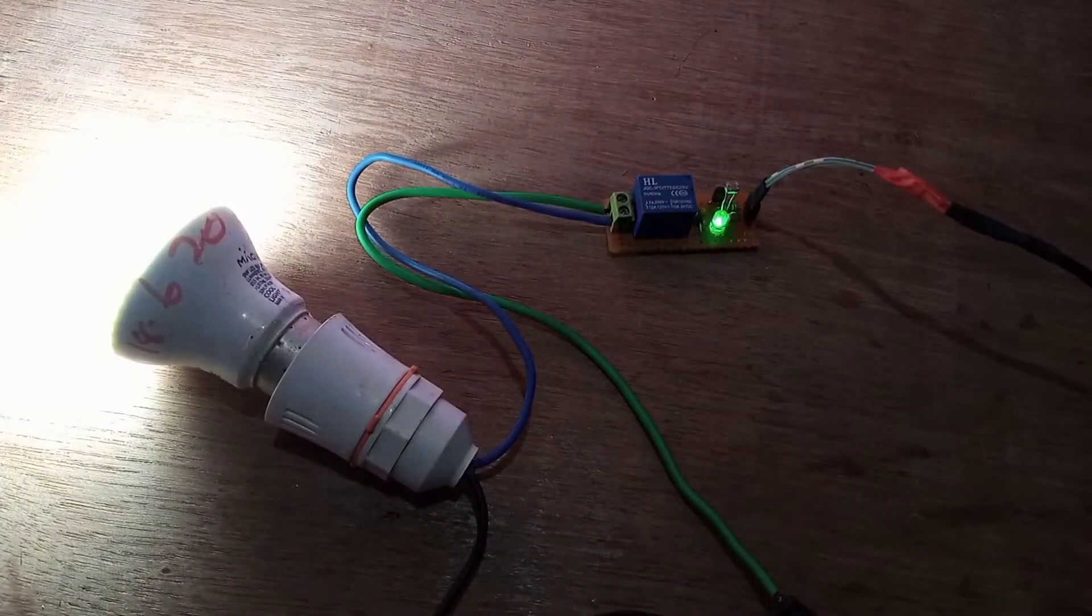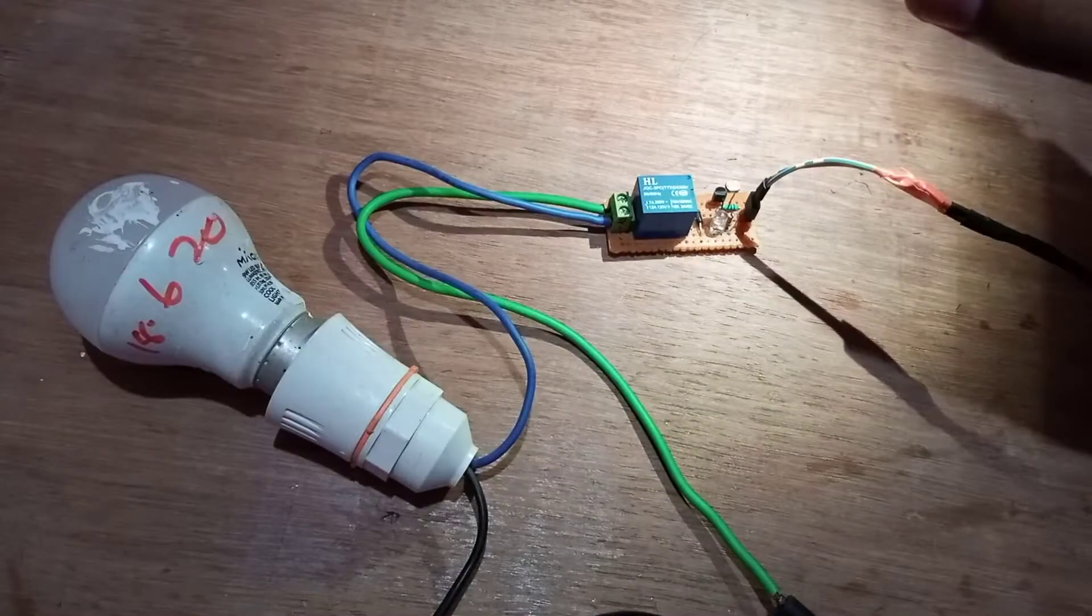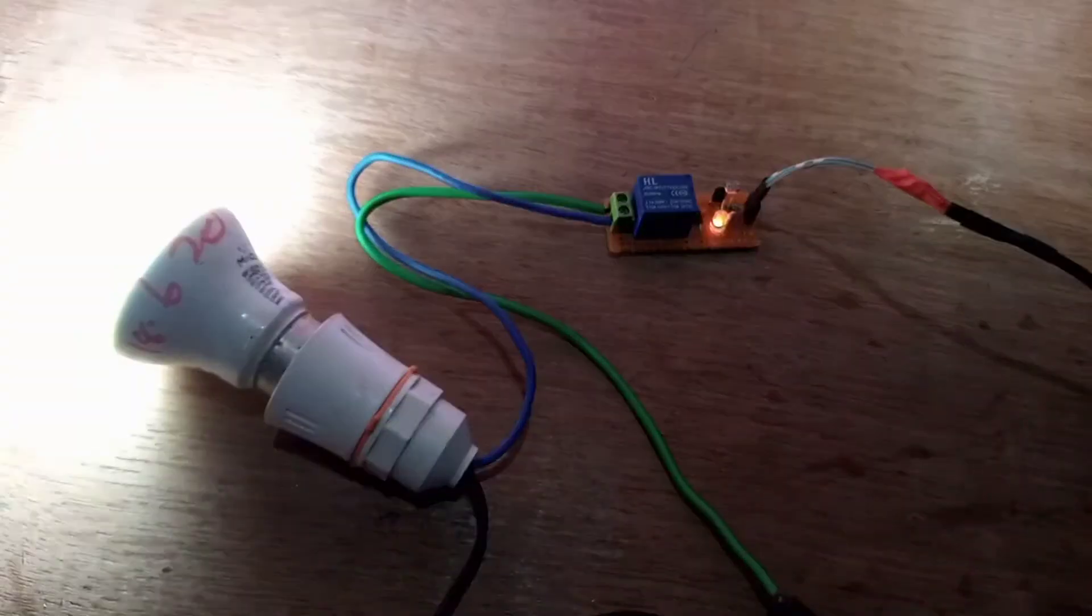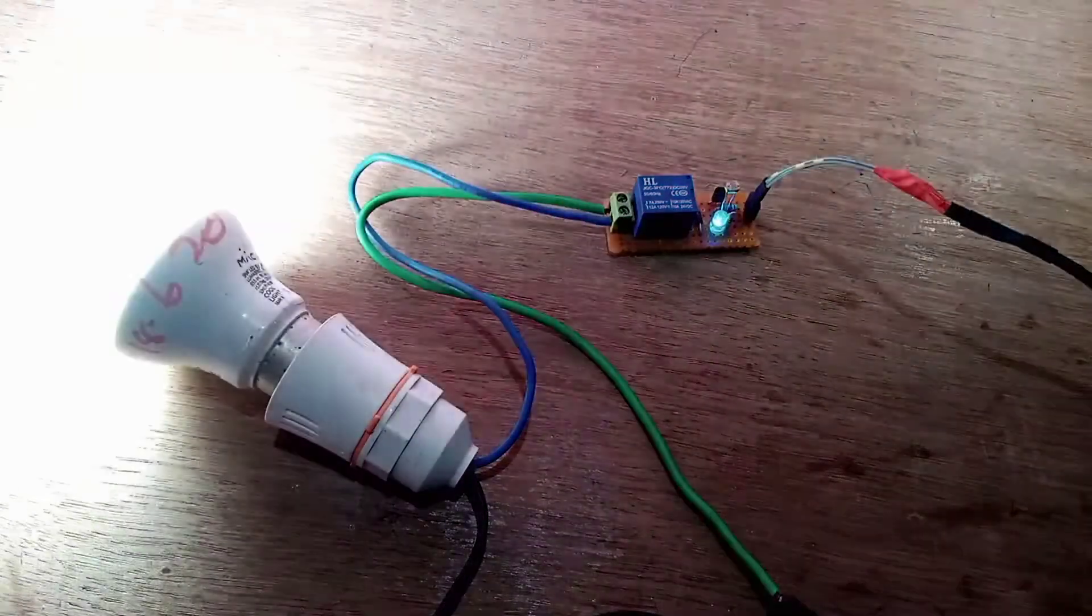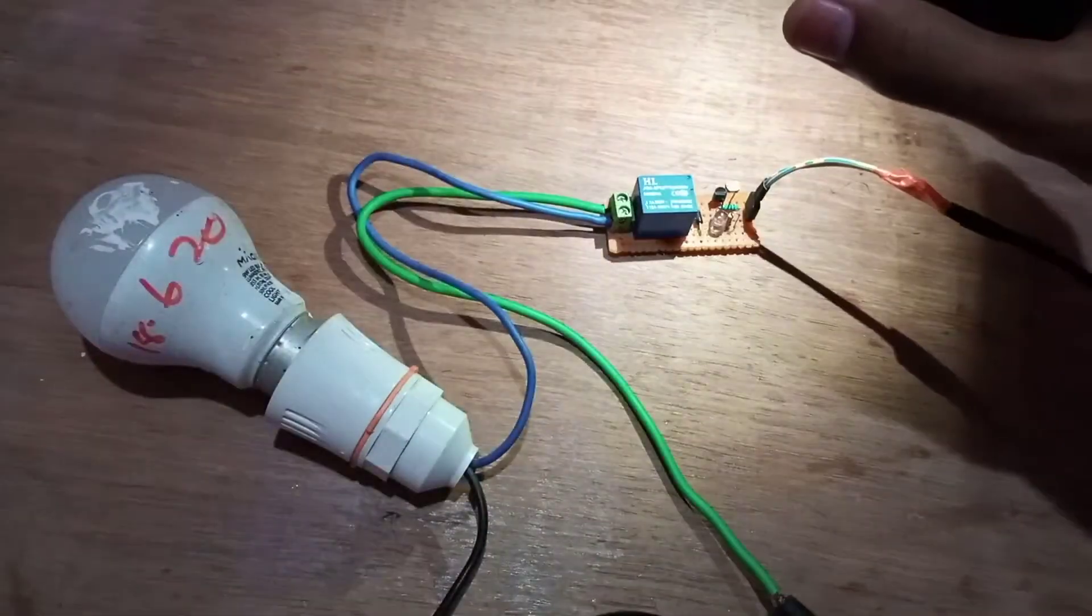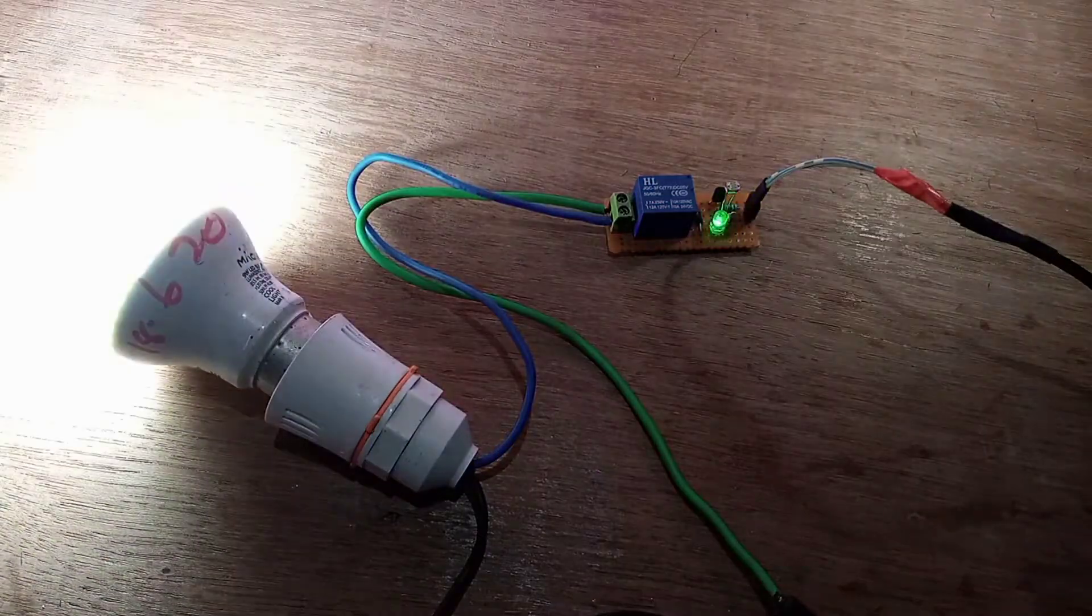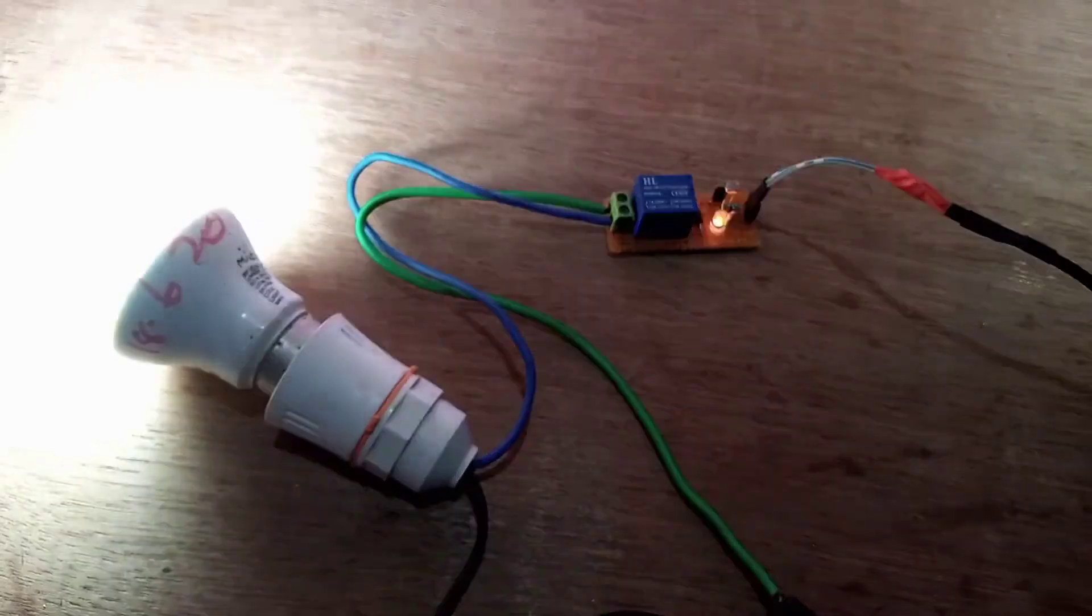I can take another light source or sunlight. I put the light on the LDR. The bulb is turned off. And when I remove the light, the bulb is turned on. This is day and this is night. Yeah, it works good.